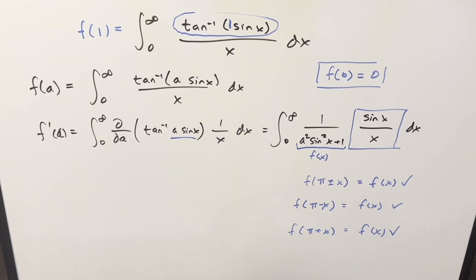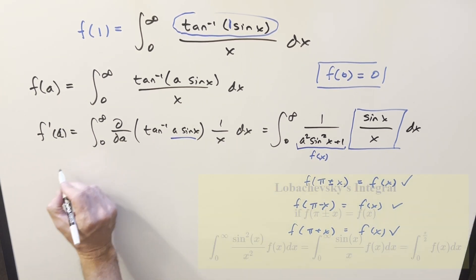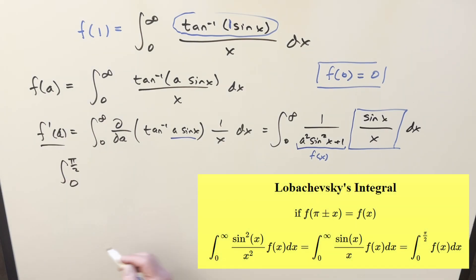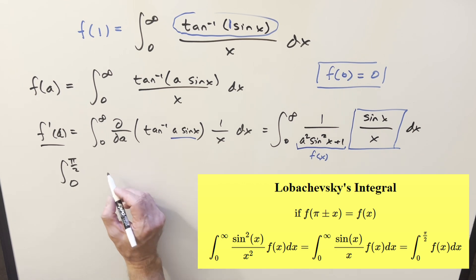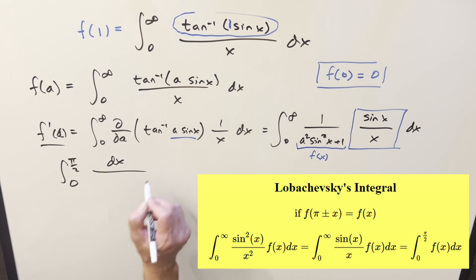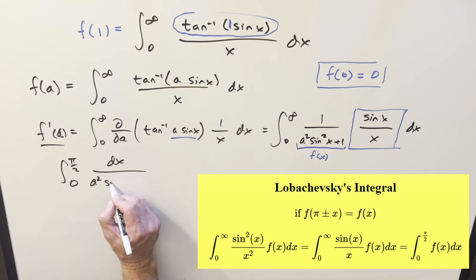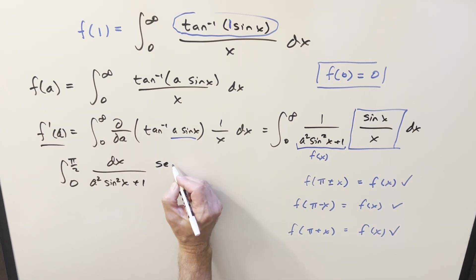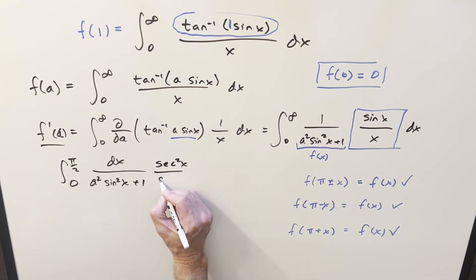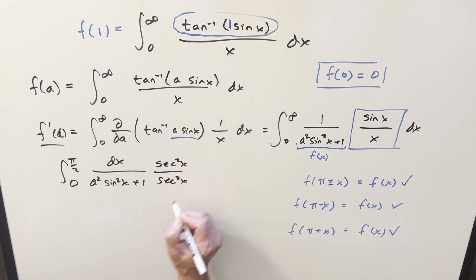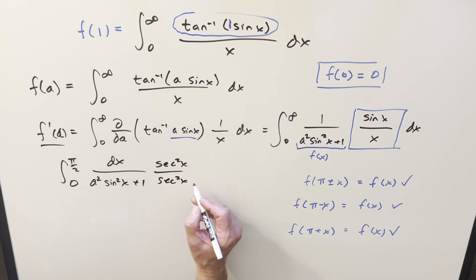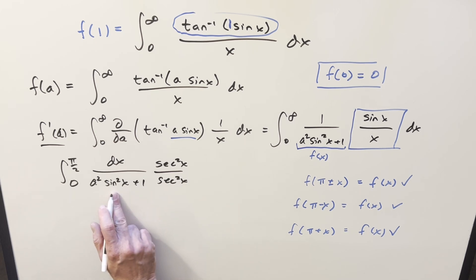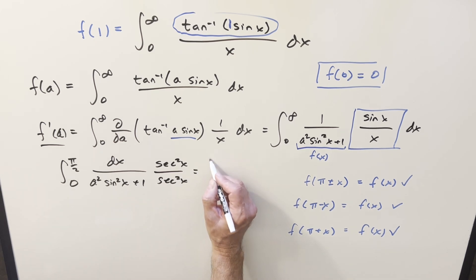That reduces everything down pretty nicely. Coming back for our f prime of a value, updating our bounds — now we're going from 0 to π/2 — and we just need to integrate our f of x piece: dx over a²·sin²x plus 1. Now I get to do one of my favorite things, which is multiply by secant²x over secant²x. I think there are different ways you could do it, but this works pretty well for me. Since secant²x is 1 over cos²x, that's going to create tangent right here.